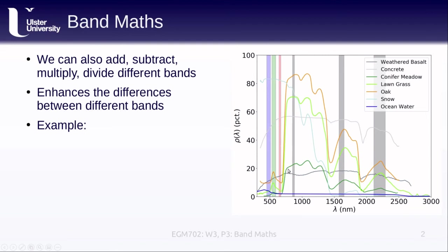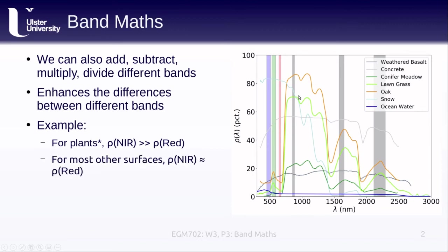For vegetation — conifer, meadows, lawn grass, and oak — we have relatively low reflectance in the red bands and very high reflectance in the near-infrared. For most chlorophyll-producing plants, the near-infrared reflectance is much greater than the red. For most other surfaces — snow and ice, concrete, weathered basalt, and ocean water — the near-infrared and red reflectance are about equal, or there is a slight drop from red to near-infrared.